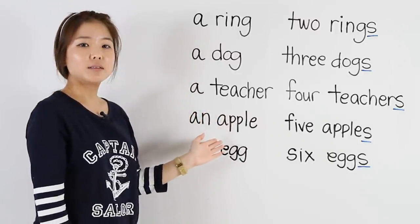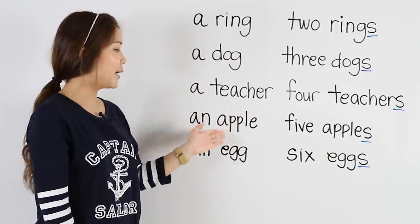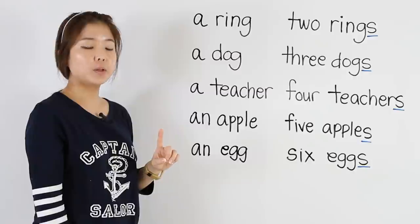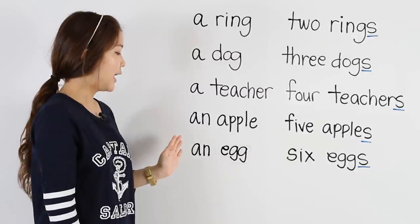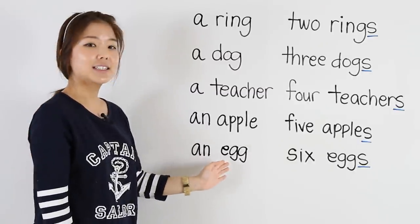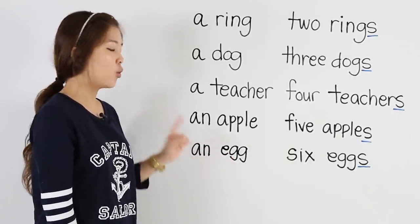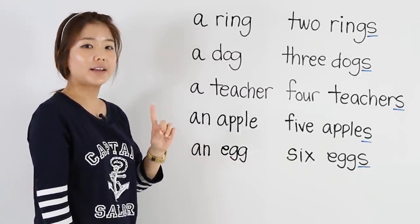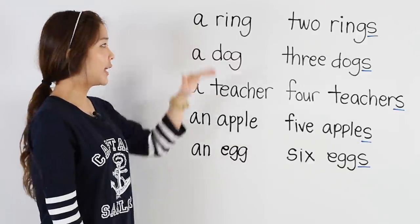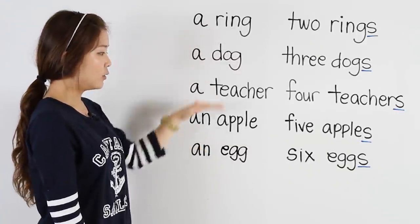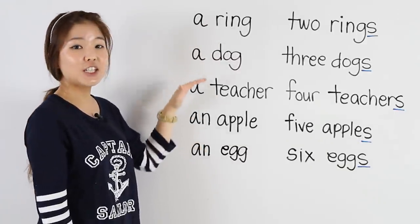An apple — one apple. An egg — one egg. So again, one noun is singular.